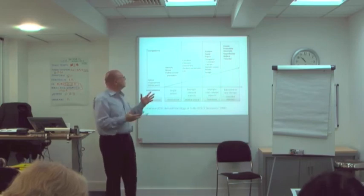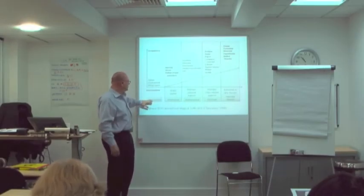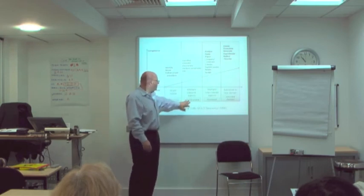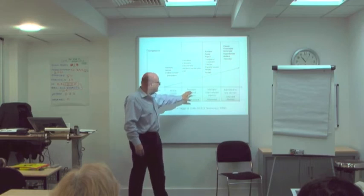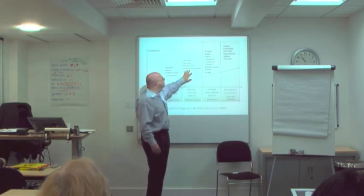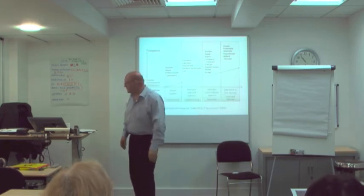The second notion, which also comes from Biggs' work, is that these things have a sense of progression. You'll start to recognise some of the notion of language and levels. So there's the idea that at a certain level — with competence at the top and incompetence at the bottom — we go from an understanding of a single aspect through to the ability to extend that knowledge to a new domain. The language Biggs uses: unistructural — a single aspect; then bringing together multiple things within that domain; then drawing relationships between them; then extending to another. The question is: where do levels 4, 5, 6, and 7 come on those columns?